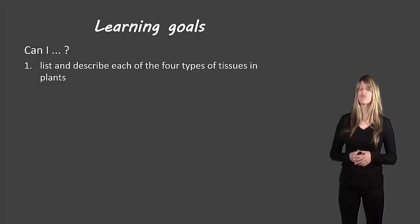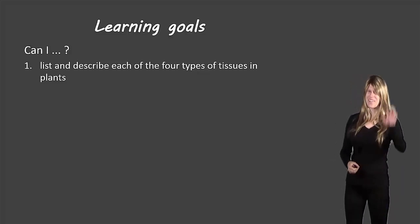So let's take another look at our learning goals. You should be able to list and describe each of the four types of tissues in plants. If you can do that, fantastic. If not, please re-watch the video, and if you're still having trouble, come ask me in class tomorrow. All right, that's all for now. Bye bye.